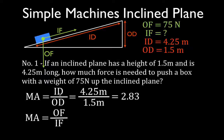That gives us a mechanical advantage of 2.83. It's not 2.83 meters or newtons because we're dividing meters by meters — the units cancel, and the mechanical advantage is therefore always a unitless number. The mechanical advantage is a factor by which the machine multiplies the input force, so this is going to multiply our force by a factor of almost 3.